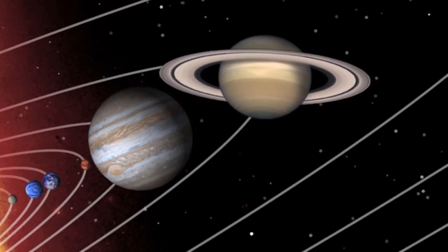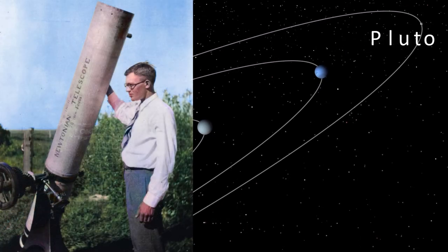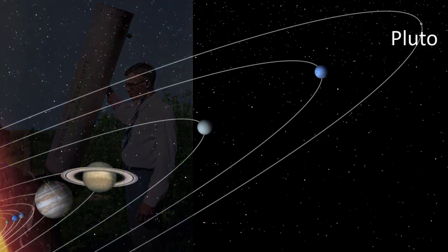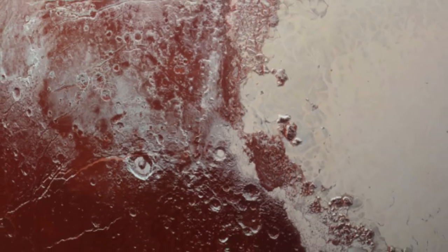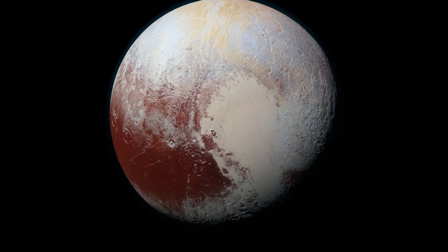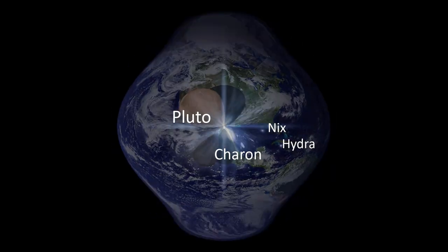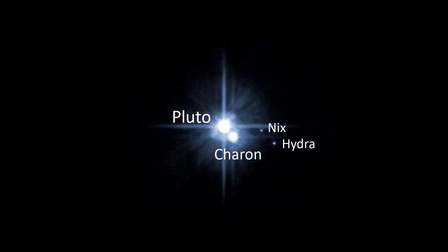For 76 years, our solar system was said to have 9 planets. This followed Clyde Tombaugh's discovery of Pluto on February 18, 1930. Pluto became planet 9. It lost its status on August 24, 2006. This was the day that the International Astronomical Union redefined the word planet. The new definition excluded Pluto, which is now classed as a dwarf planet.